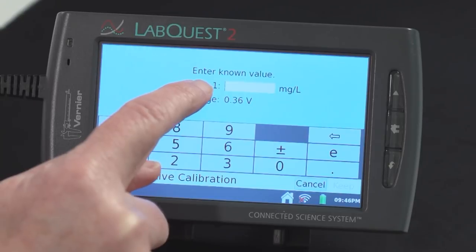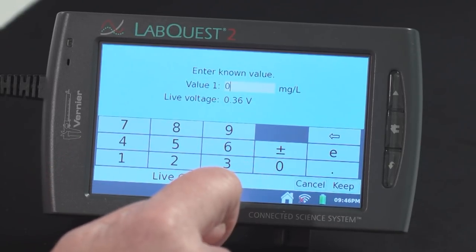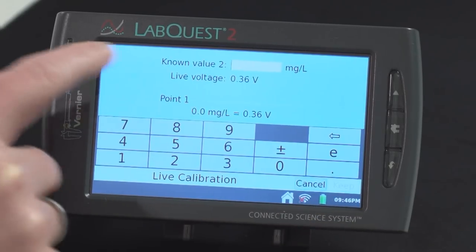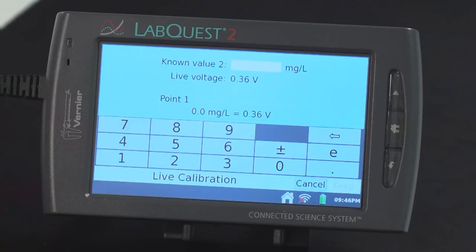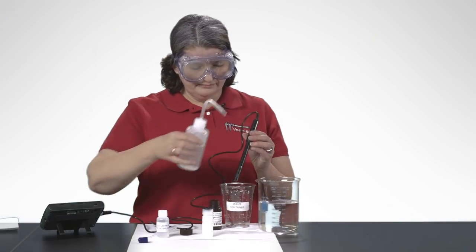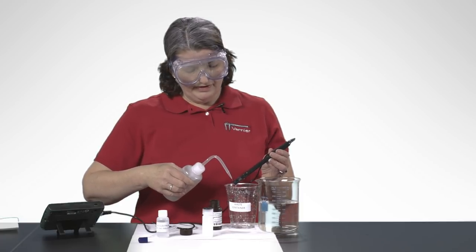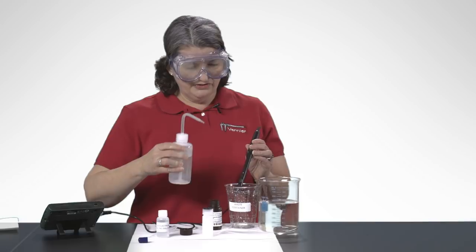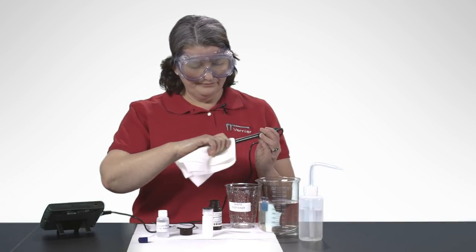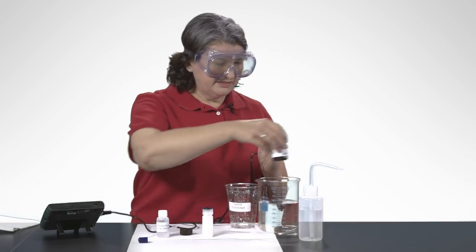Okay, so we're stable here. So from value number one, this is our zero milligrams per liter. So I just type a zero and say keep. And now it's asking me for my known value, number two. So let me rinse this off. You need to rinse this very well. I don't want any of that sodium sulfite solution still on there. Dry it. Okay, set this aside.